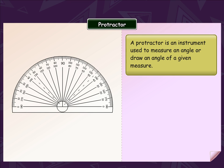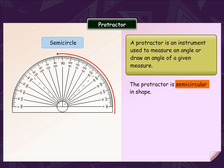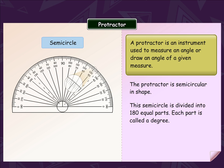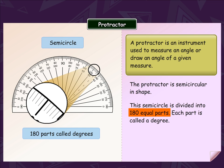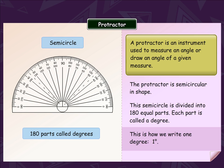Protractor. A protractor is an instrument used to measure an angle or draw an angle of a given measure. The protractor is semicircular in shape. This shape is divided into 180 equal parts. Each part is called a degree. This is how we write one degree.